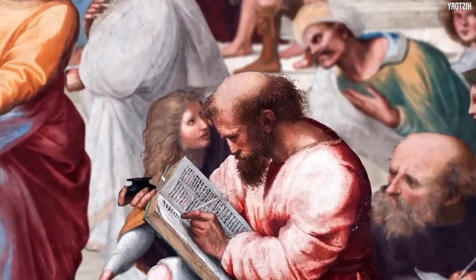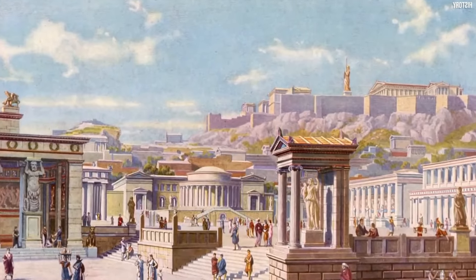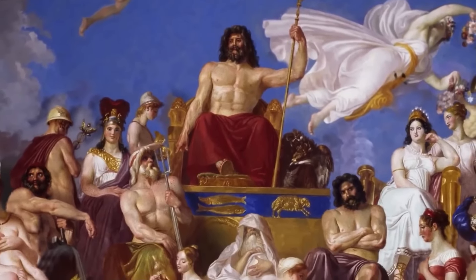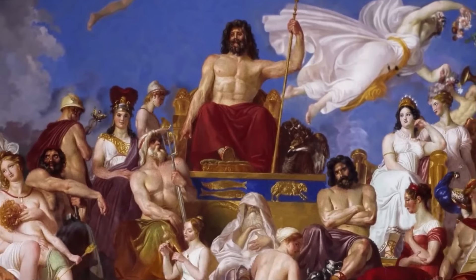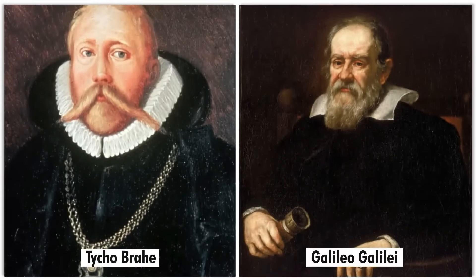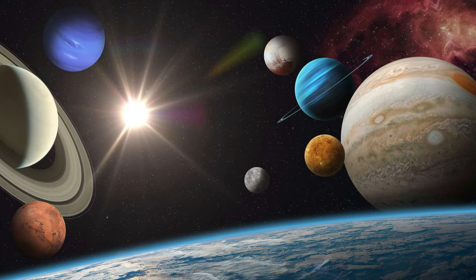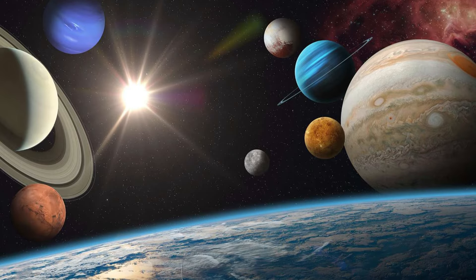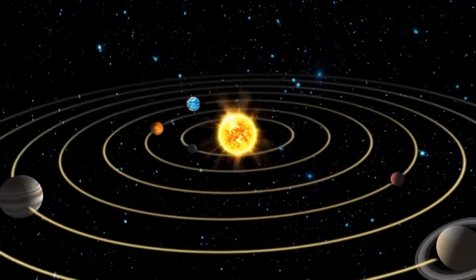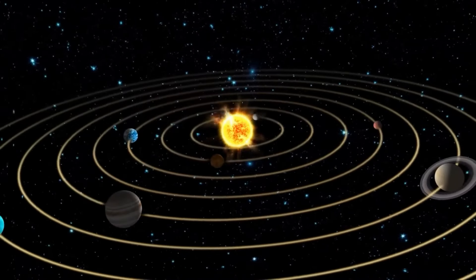According to Newton, gravity is an intrinsic force that the Earth possesses and is responsible for directing everything toward its center. According to Einstein, space and time functioned as a fabric, and that is why objects were drawn toward the center of the Earth rather than by a force.